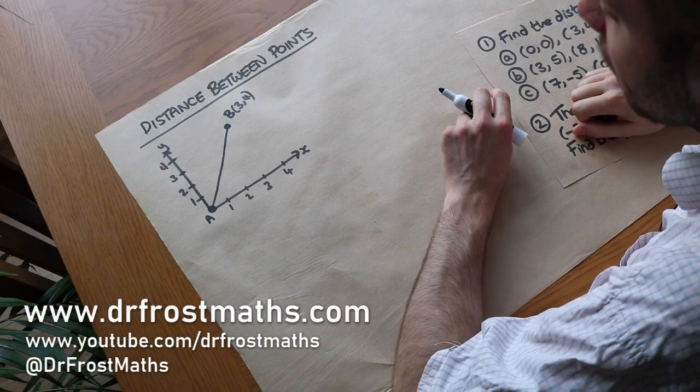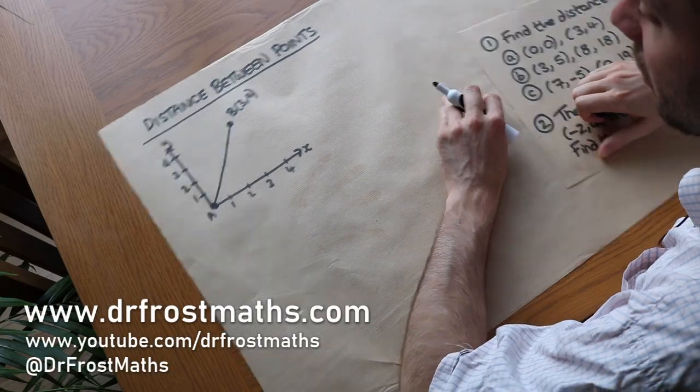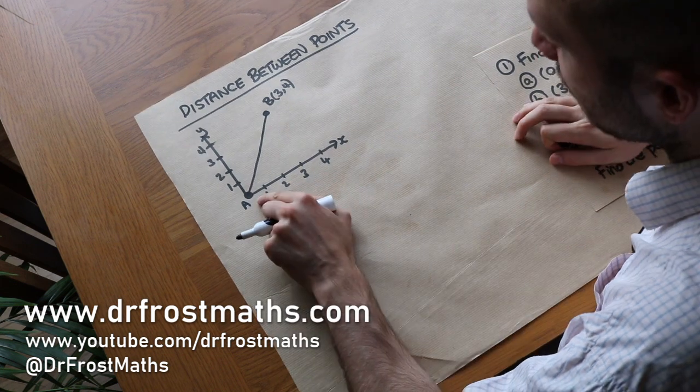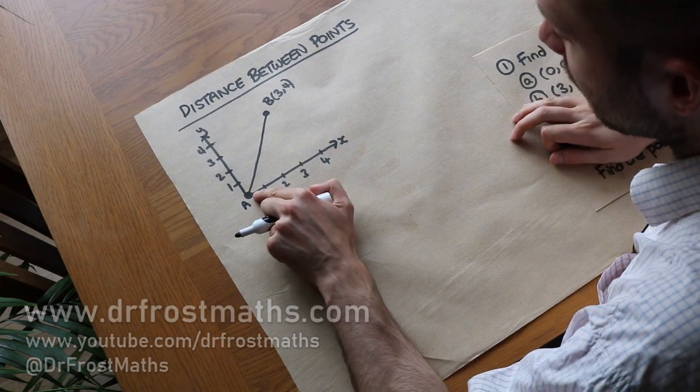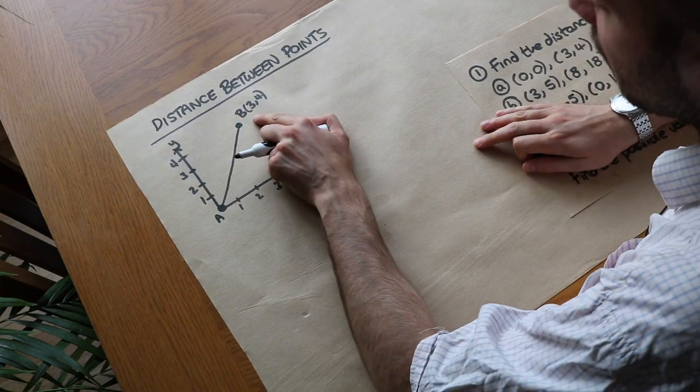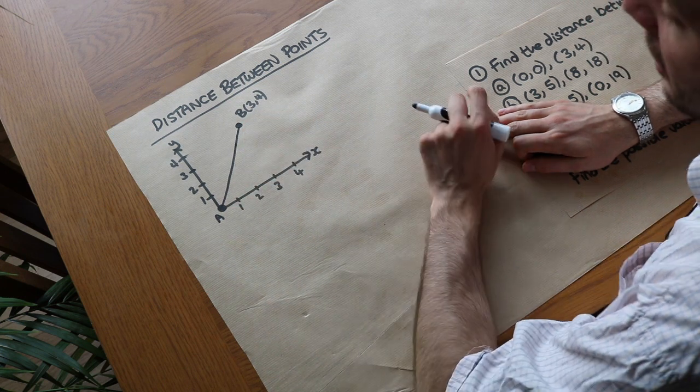Hello and welcome to this video on finding the distance between two points. Now let's just suppose that we've got these two points here. So we've got the point A which is the origin, so it's 0, 0, and we've got the point here B which is 3, 4, and we want to find this distance.